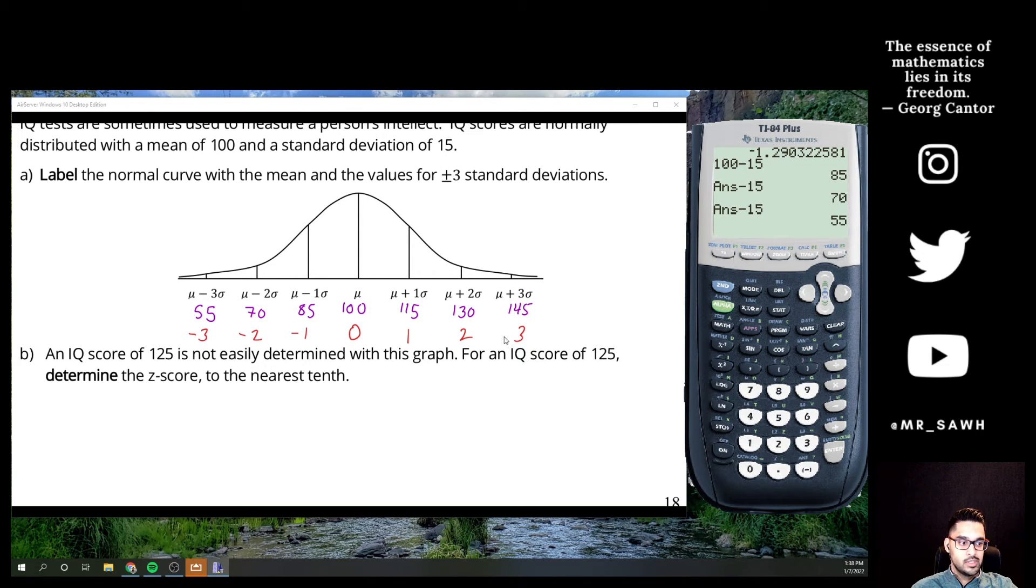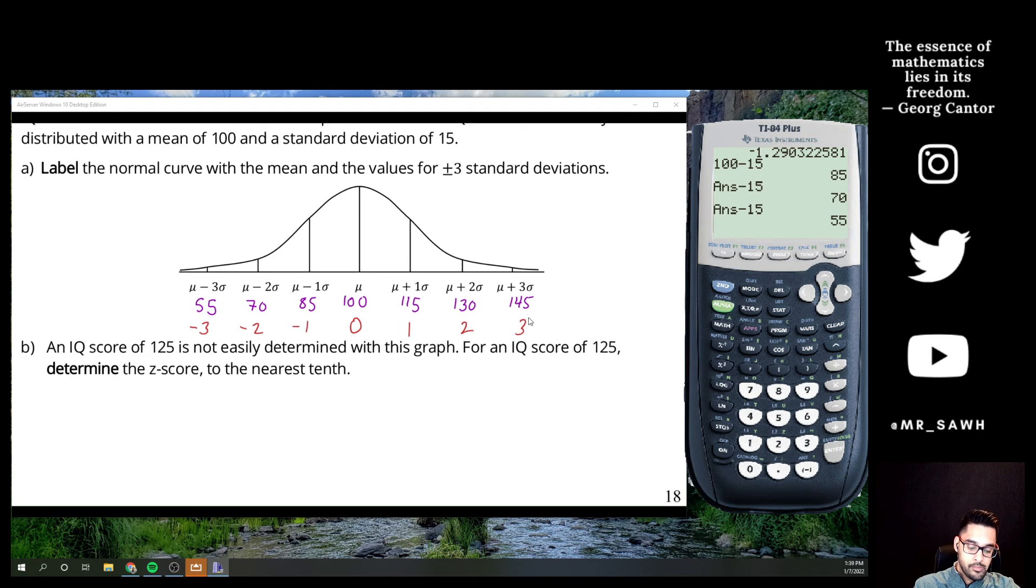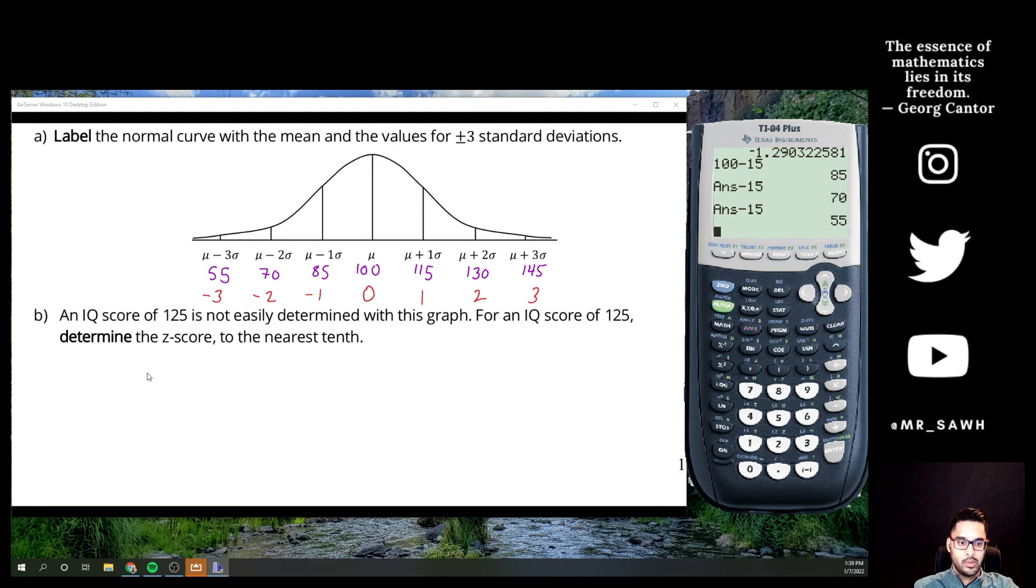So a z-score of three would give me a specific value of 145. A z-score in between two and three would give me a value that's actually in between 130 and 145. That's really all this means. So if I actually think about doing this example, a score of 125 isn't easily determined with this graph. I know roughly it'll be in between one and two in terms of z-scores, but I can't really place it super precisely. So I use the z-score to do it. It's a little bit more exact, a little bit more precise when talking about this.